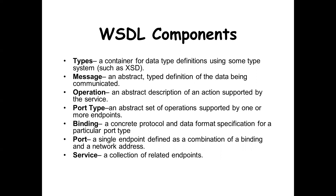Type is a container for the data type definitions like XSD. Message is the actual type definition of the data that we are going to communicate through the web services. Operation is the abstract description of the action which is supported by the service. Port type is the set of operations supported by more than one endpoint. Binding is the protocol and data format specification for a particular port type. Port is a single endpoint defined as a combination of binding and network address. And the last component is service — a collection of related endpoints.